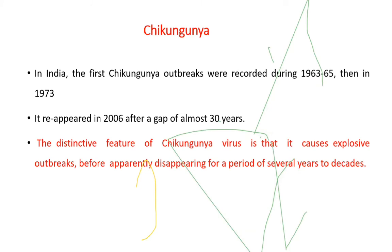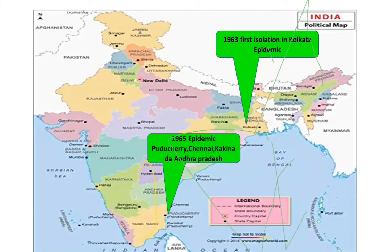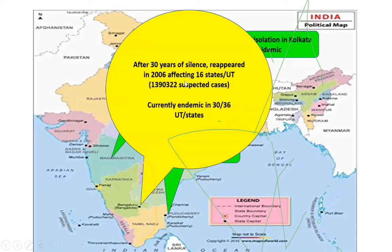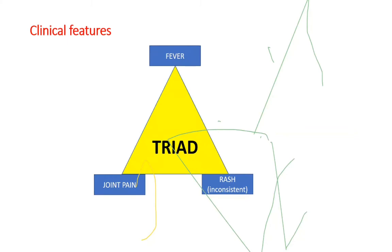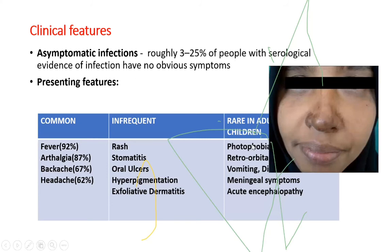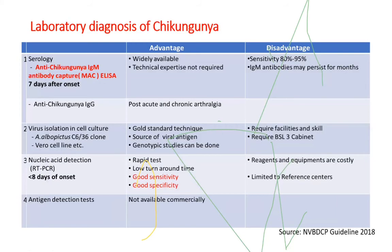Chikungunya first appeared in 1963-65, then underwent hibernation for 30 years. In 2006, there was a huge outbreak where millions were affected in India. Clinical features include characteristically fever, joint pain, and rash. It may be asymptomatic or present with fever, arthralgia, rash, and even CNS symptoms. Post-fever hyperpigmentation is classically seen in chikungunya. Lab diagnosis includes IgG antibody detection 7 days after onset of illness, and nucleic acid detection in the initial phase.